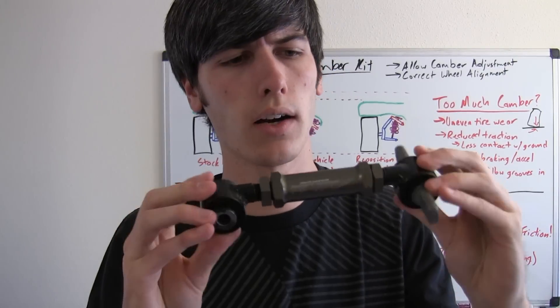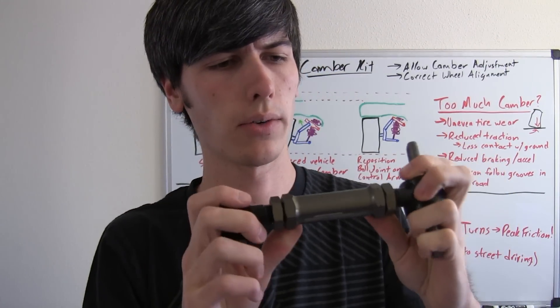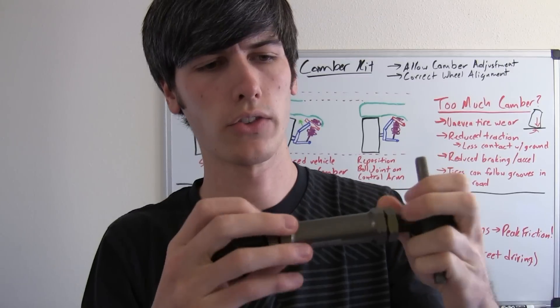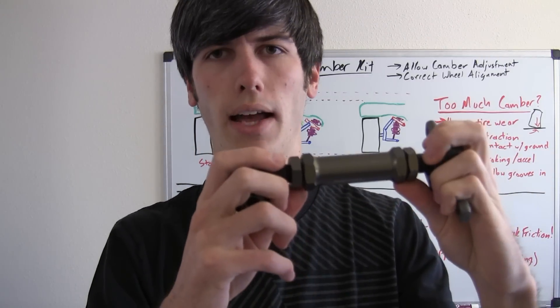And here we have the rear camber kit. This will be the upper control arm for the rear of an Acura Integra. Basically it's just a threaded rod, and you can rotate it to the length that you want to set the camber at.